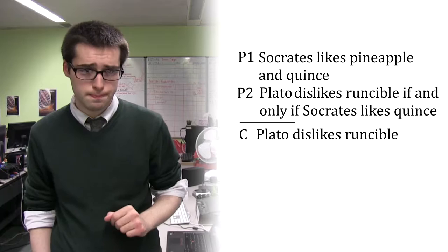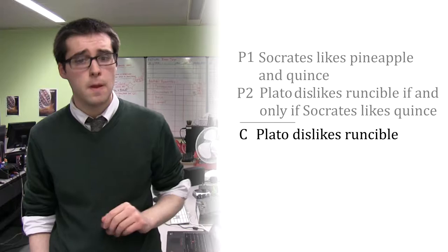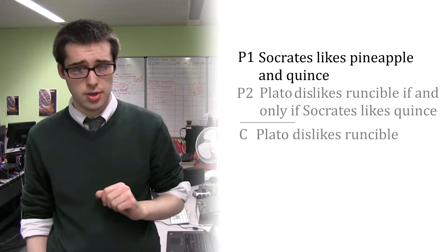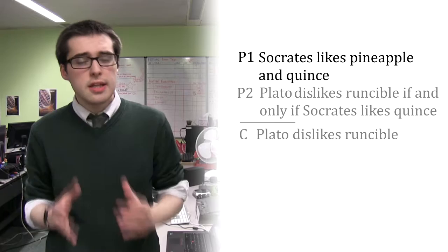This argument contains two premises and a conclusion. The first premise contains two propositions connected with a conjunction: Socrates likes pineapple and Socrates likes quince. Let's give these propositions sentence letters in our key.